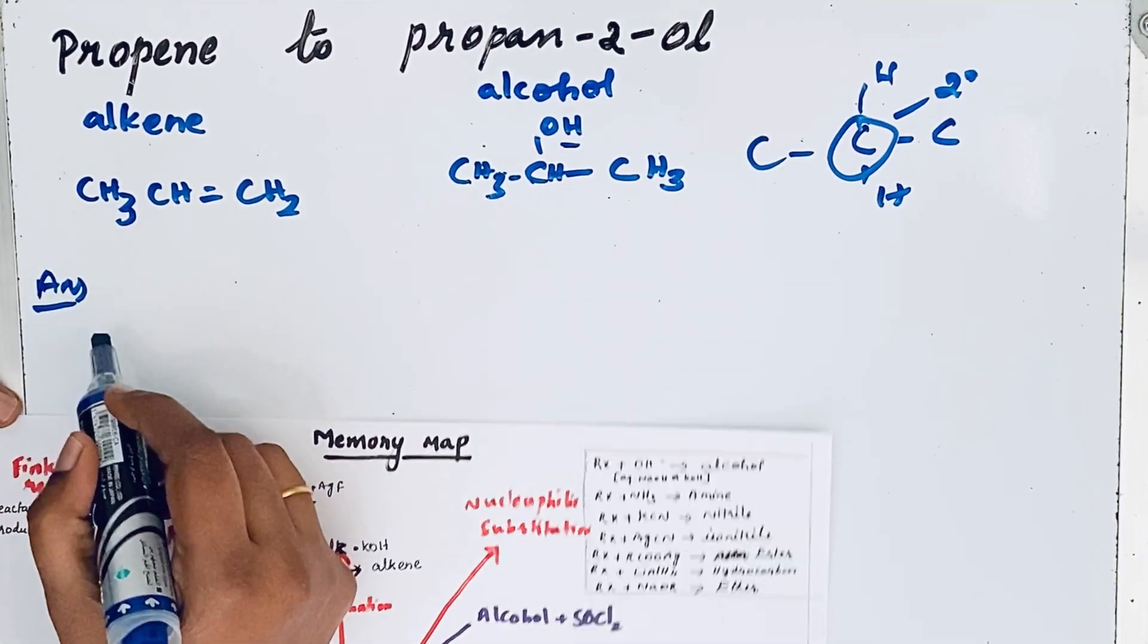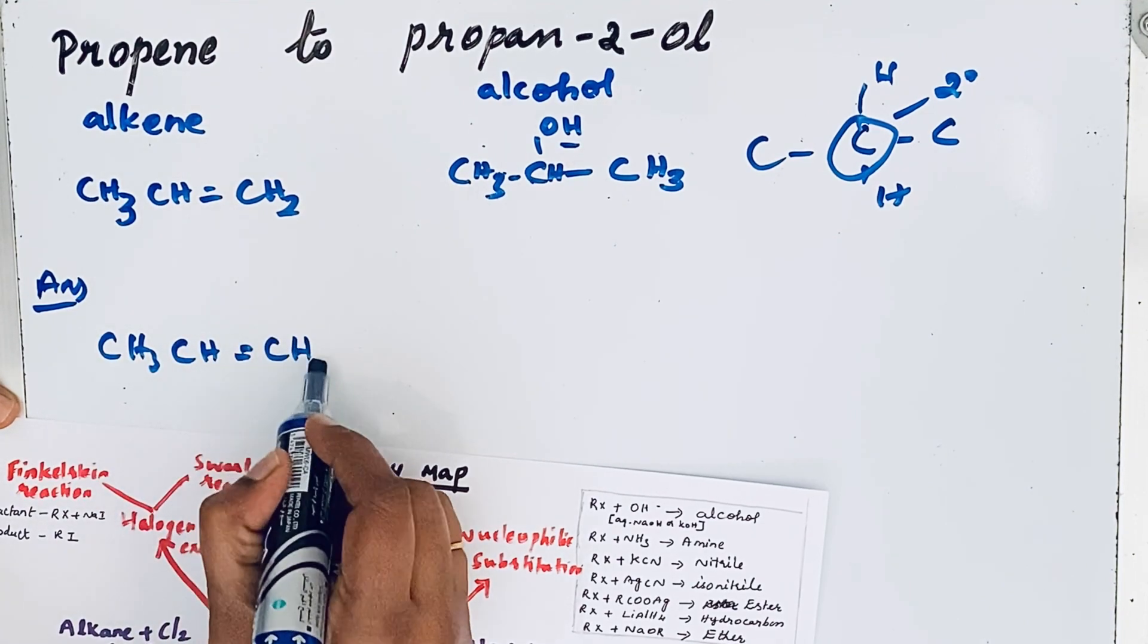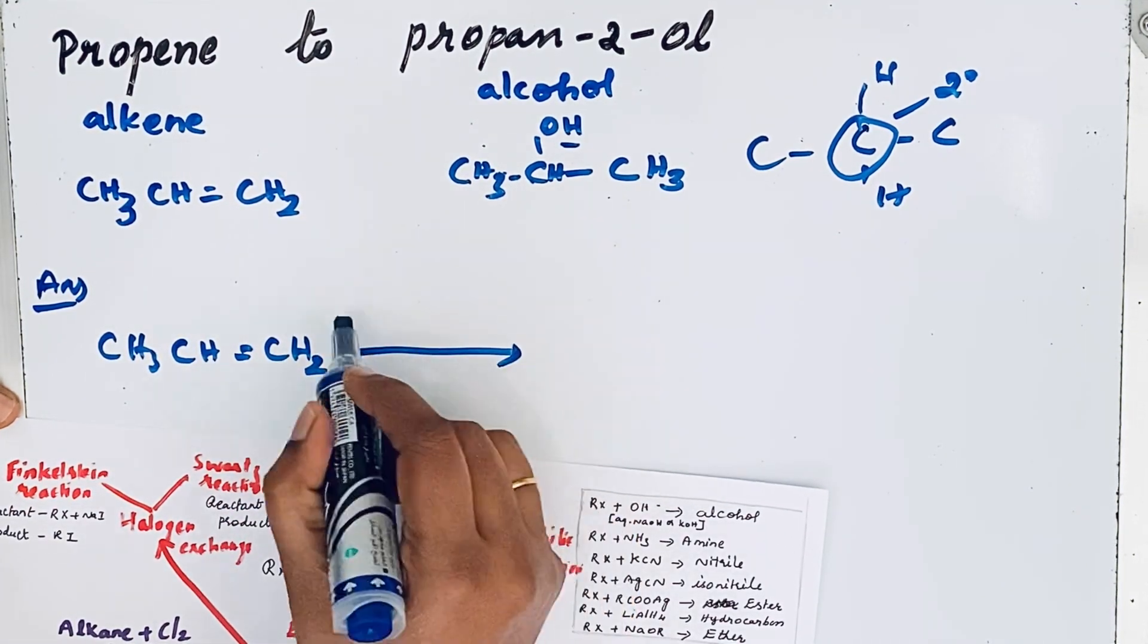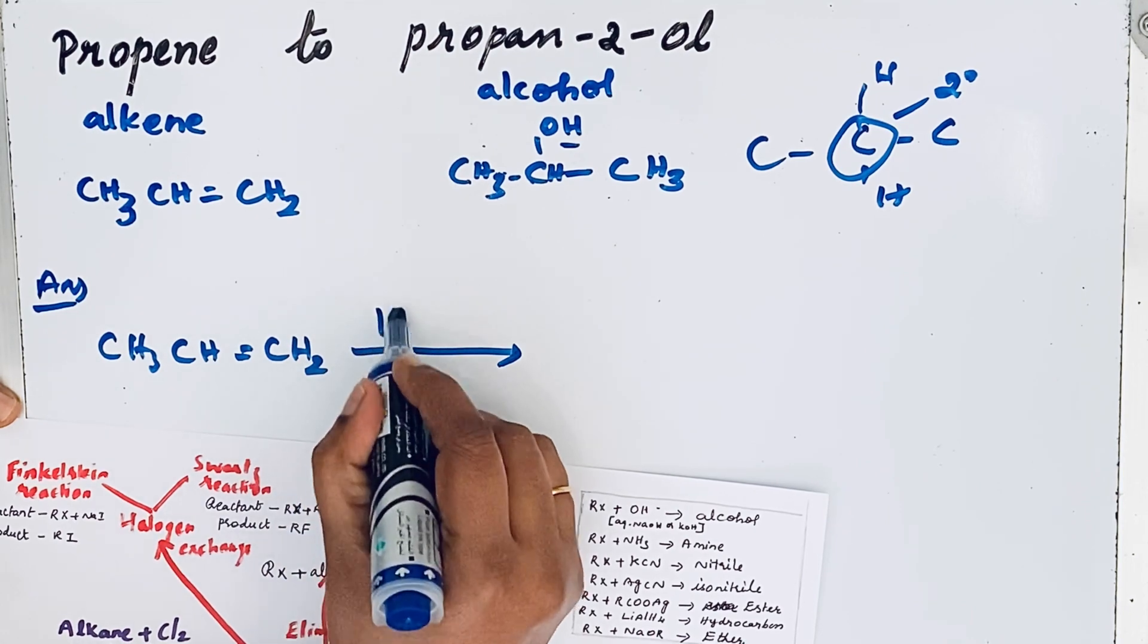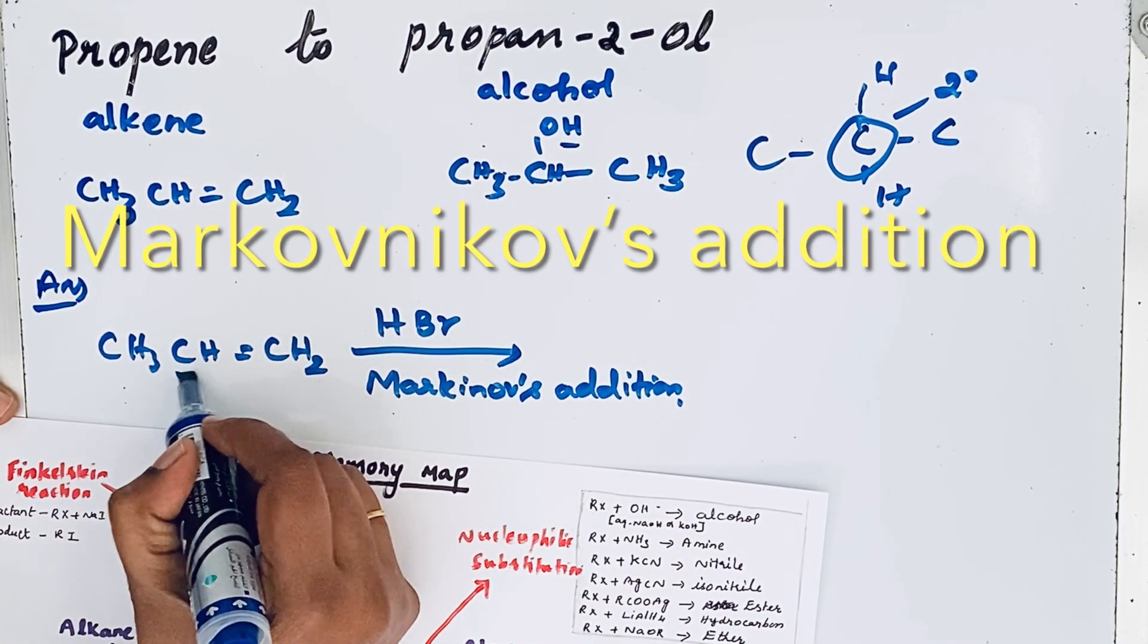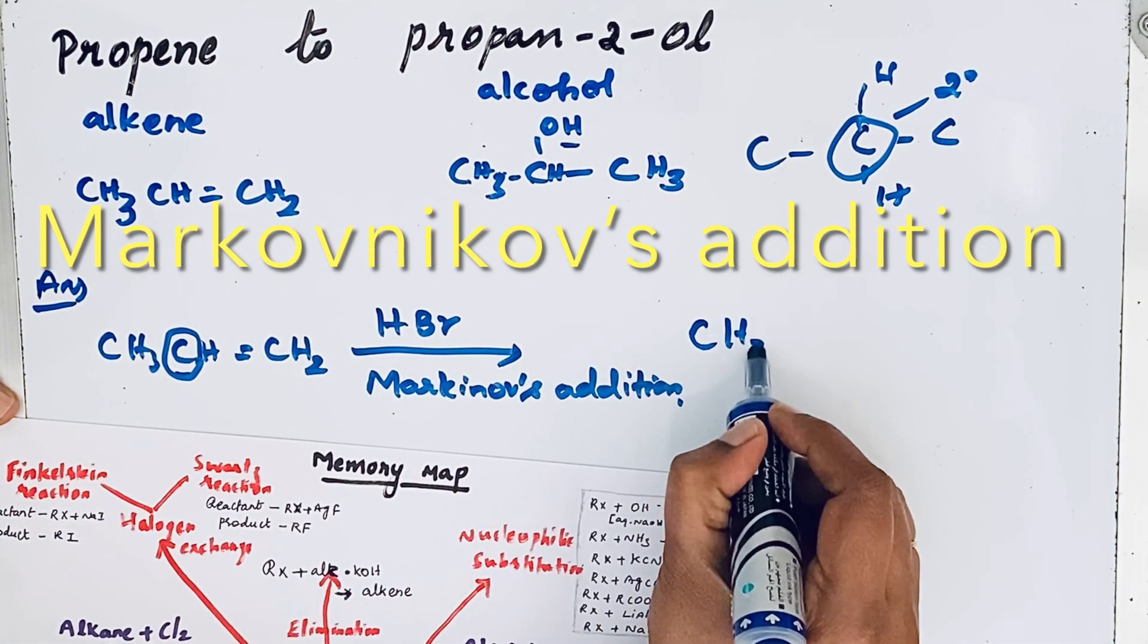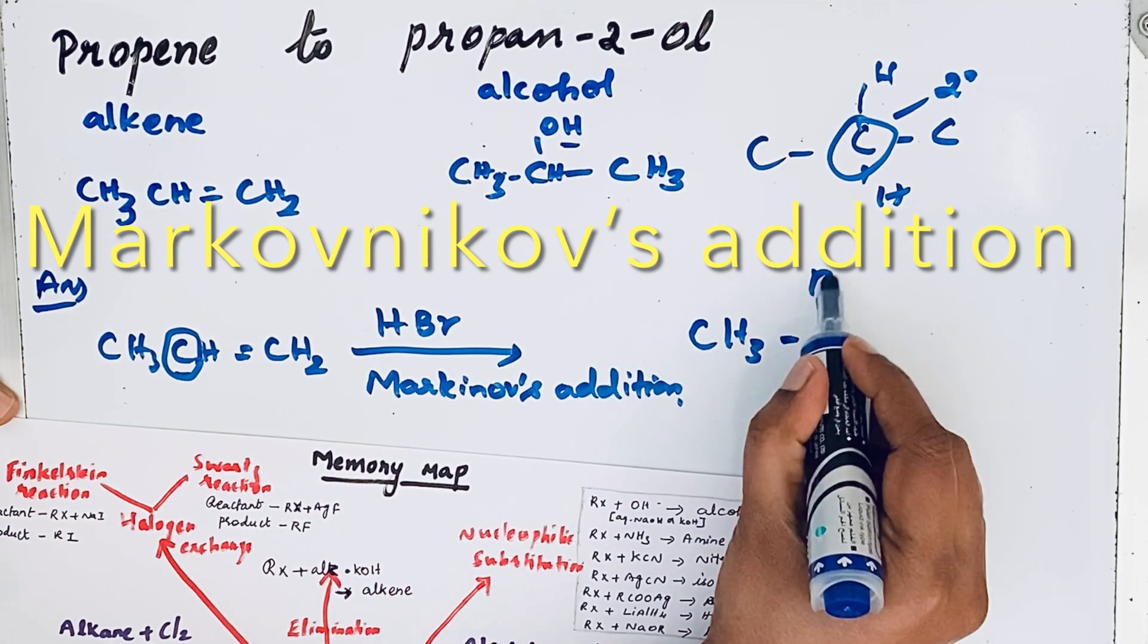First, let us write propene: CH3-CH=CH2. That undergoes Markovnikov's rule with HBr. This Br will attach to the secondary carbon, so this is the secondary carbon. The Br will attach here: CH3-CHBr-CH3.